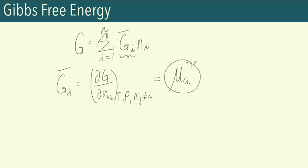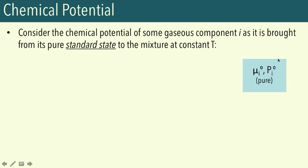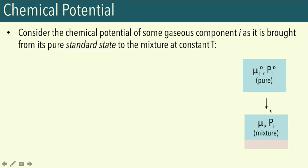The challenge is now to determine the partial molar Gibbs free energy or chemical potential of a component in a multi-component system. We can do this by starting with a reference state and bringing our component to the state where it is in a mixture. Our reference state will be the chemical potential of the component in its pure state, mu-i-zero. For gases, the standard state is one atmosphere (or one bar in some references), indicated as P0. We'll be bringing our gaseous component from its pure state to when it's in a mixture at partial pressure Pi.